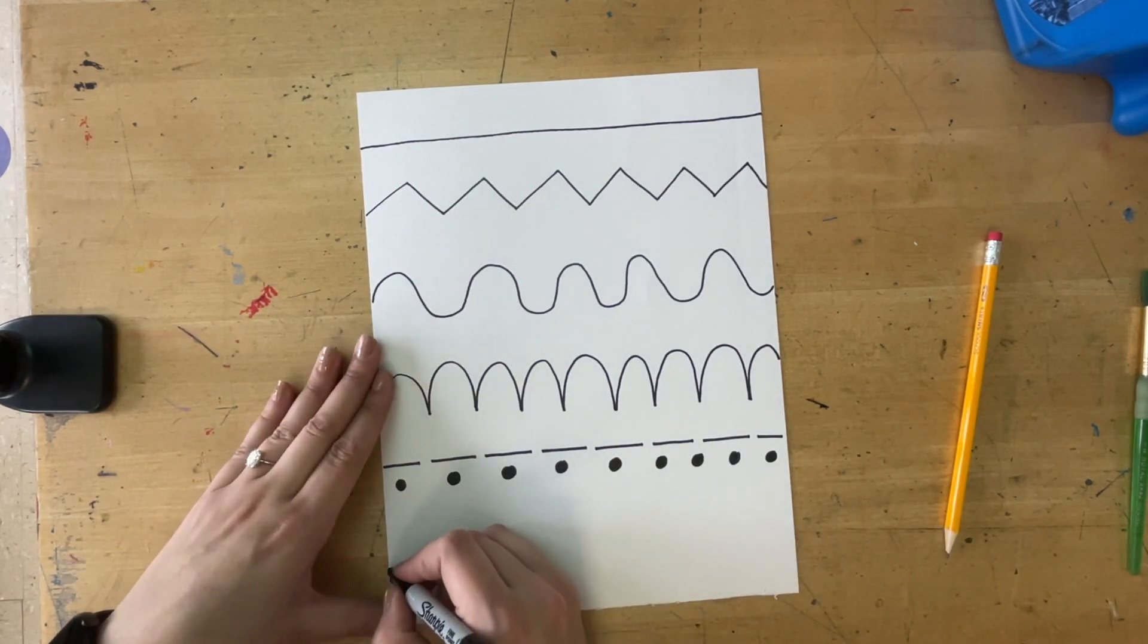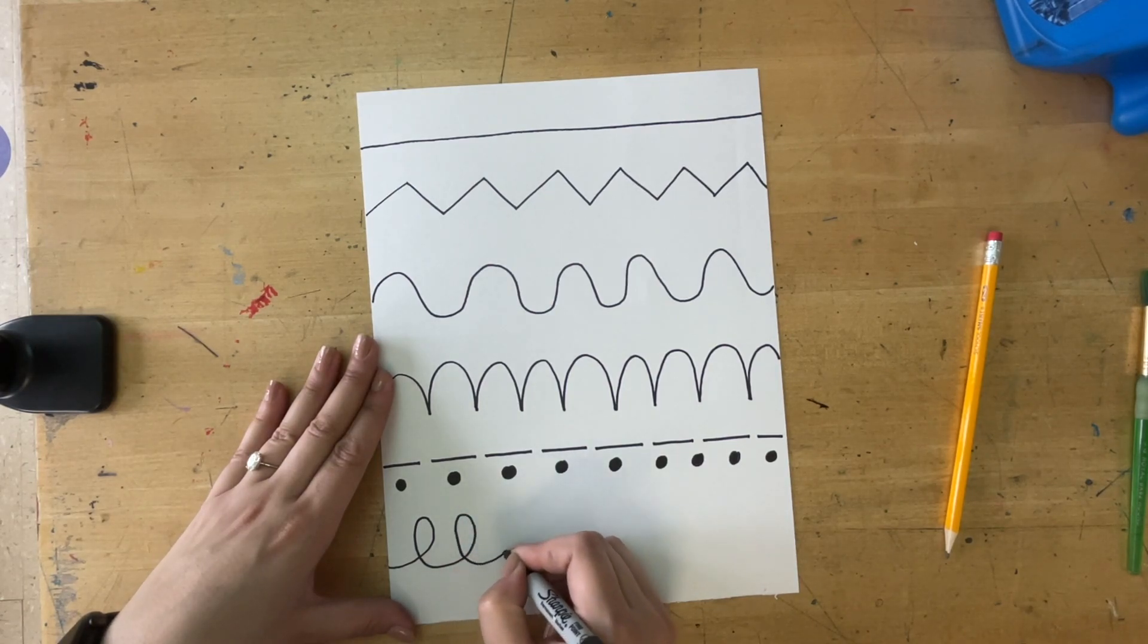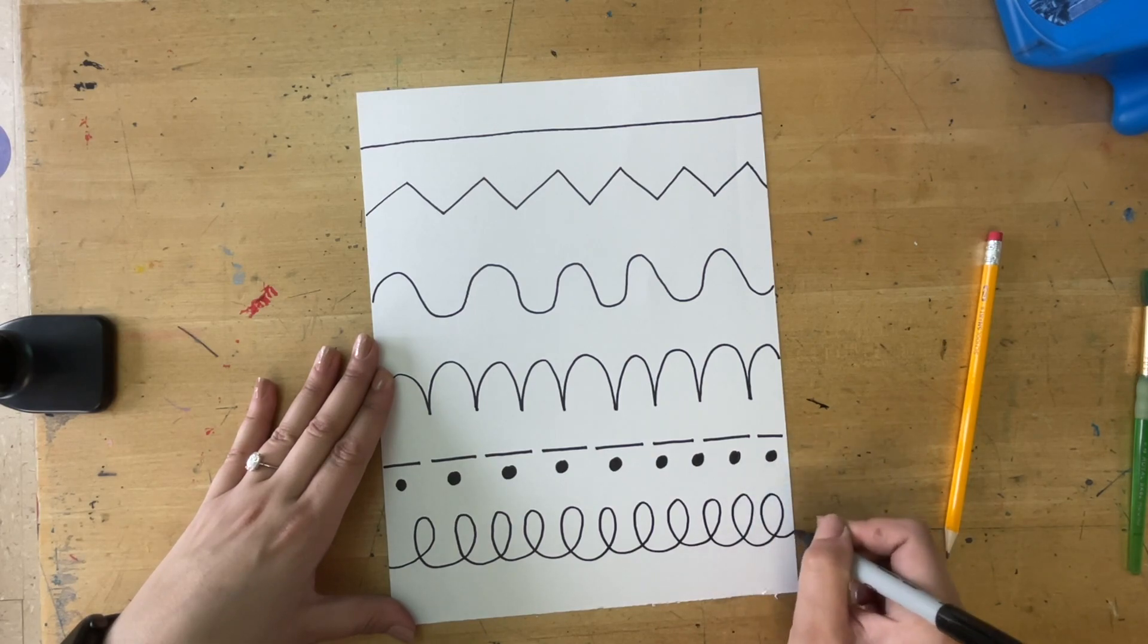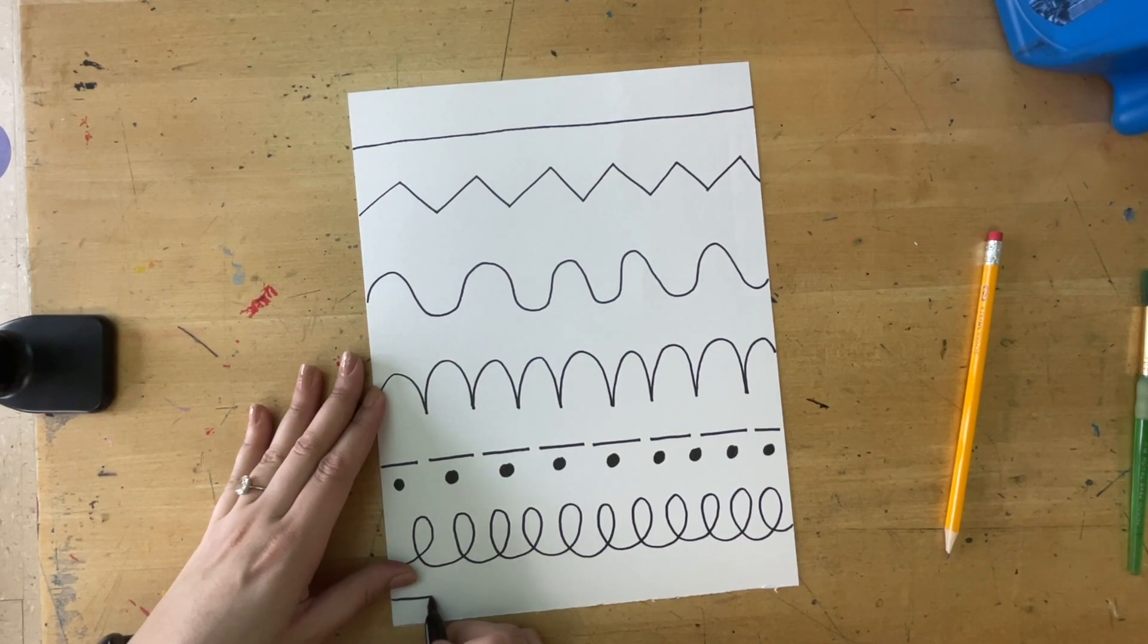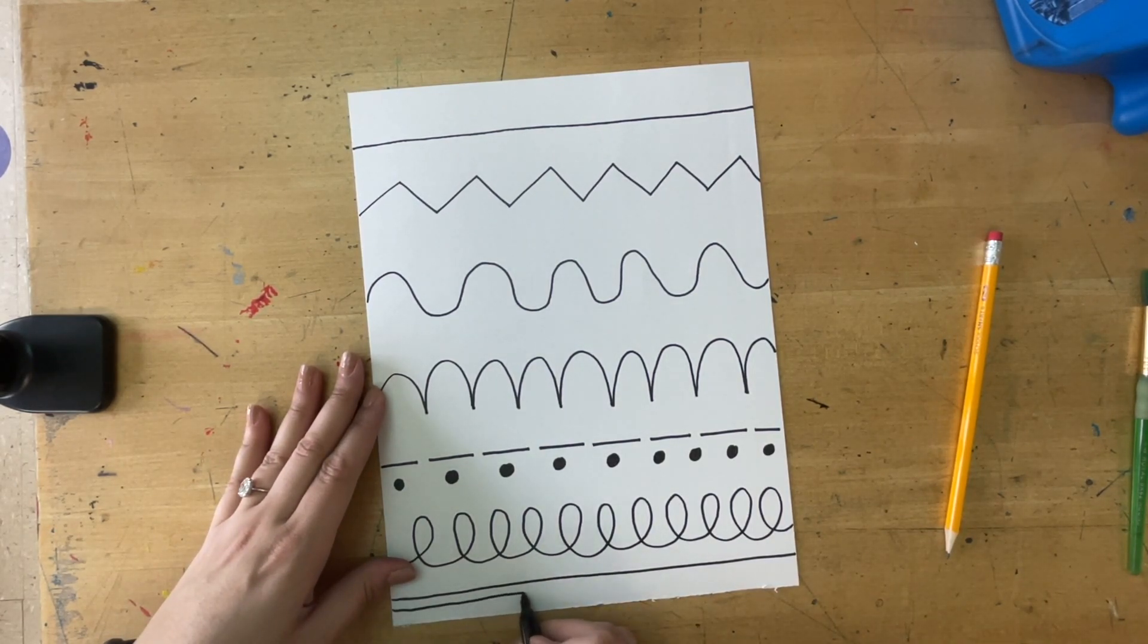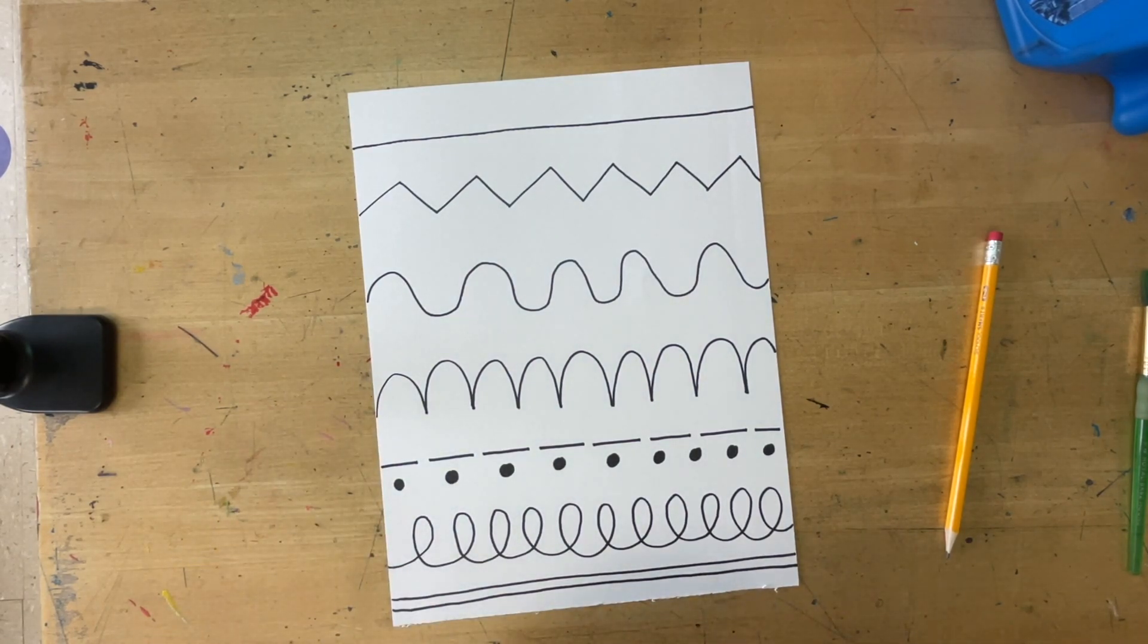Next is our loopy line. This one looks almost like E's that are connected together. And on the bottom I'm going to do parallel lines. Parallel lines are straight lines that never cross, so almost like railroad tracks. They never ever cross. I'm going to put my Sharpie away and next we're going to start painting.